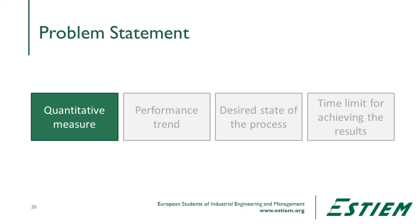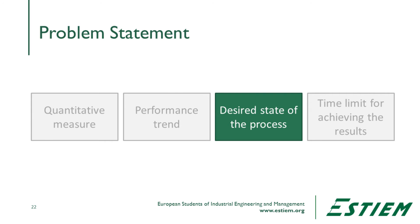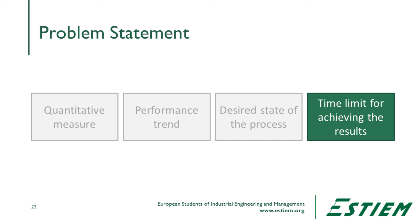We haven't yet addressed the key measurable characteristics that unambiguously describe the situation. We need to understand the physical measurements, the boundary of the problem, and the different rational subgroups that can be analyzed and that contribute to overall performance. At that point we can form the problem statement as discussed in the project charter: What's the quantitative measure agreed by management? What's the performance trend — do we want to increase, reduce, or control it? What's the desired state and time limit for achieving it? Some rational subgroups or process steps may be destroying our capability to deliver that goal.